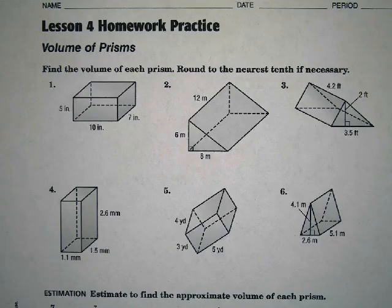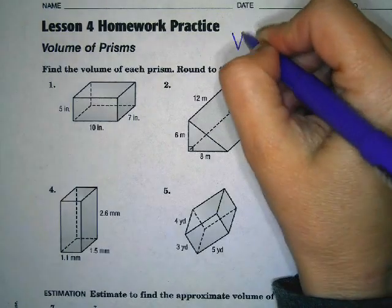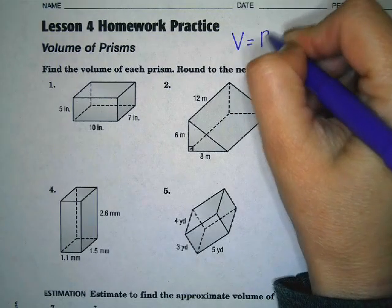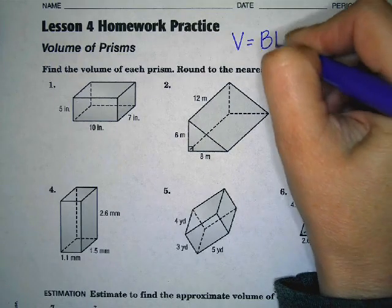Today we're finding the volume of prisms. Remember the equation that we're working with is volume equals the base area, or the area of the base, times the height.